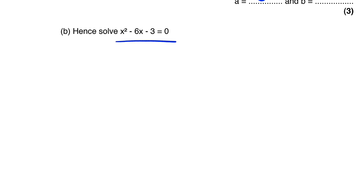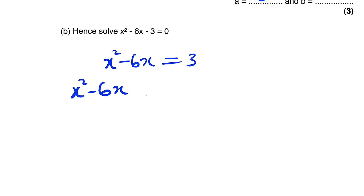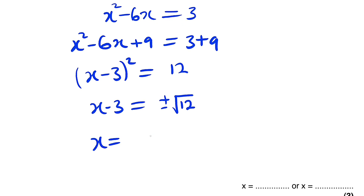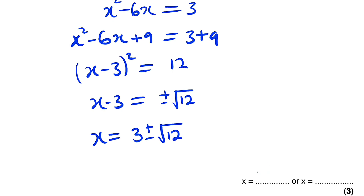We are also asked to solve this equation by completing the square method. We have x squared minus 6x, take negative 3 to the right to get plus 3. Half of negative 6 is negative 3, squared is 9, so we add 9 to both sides. The left side becomes x minus 3, all squared, and the right side is 12. Therefore x minus 3 equals plus or minus the square root of 12, and since the square root of 12 equals 2 root 3, x equals 3 plus or minus 2 root 3.